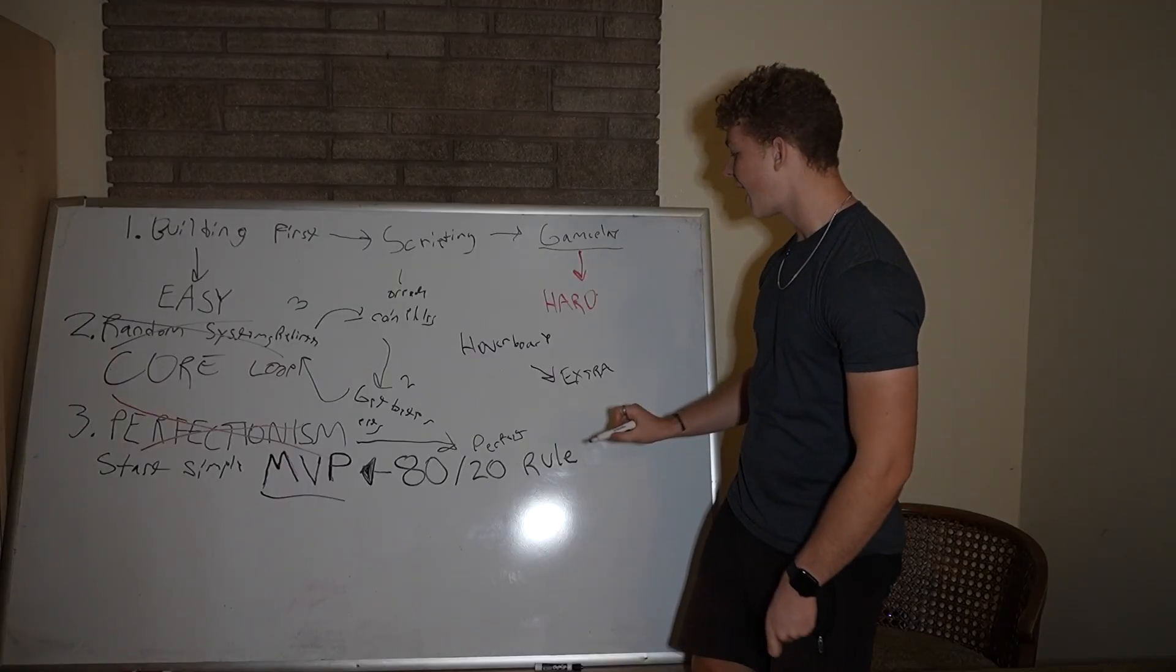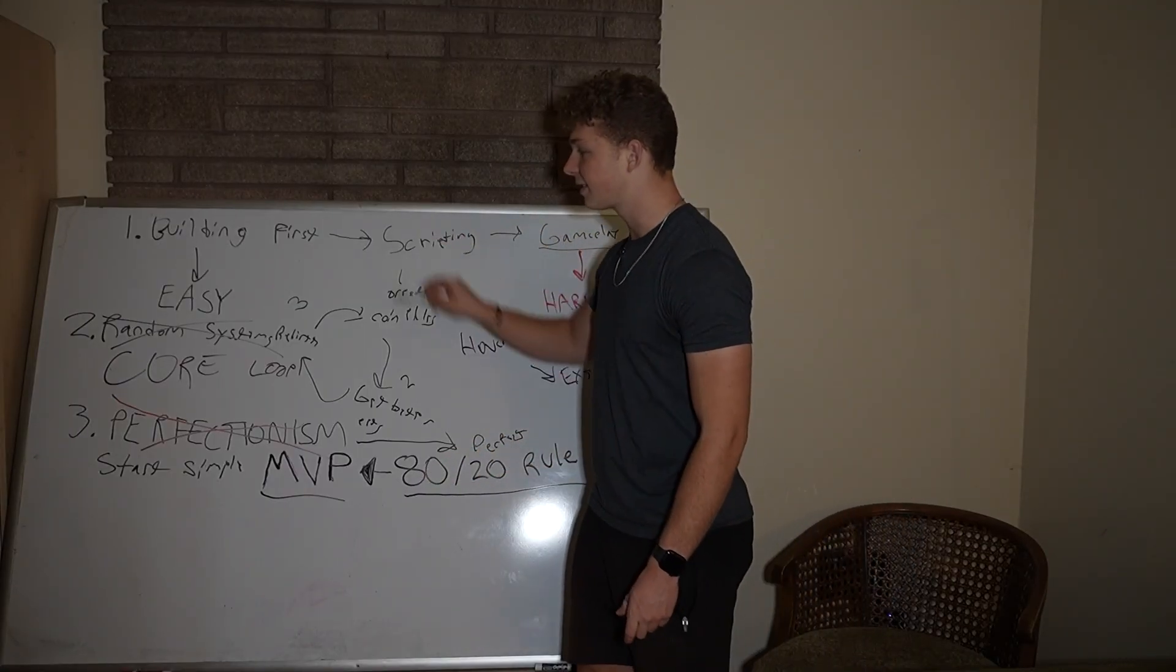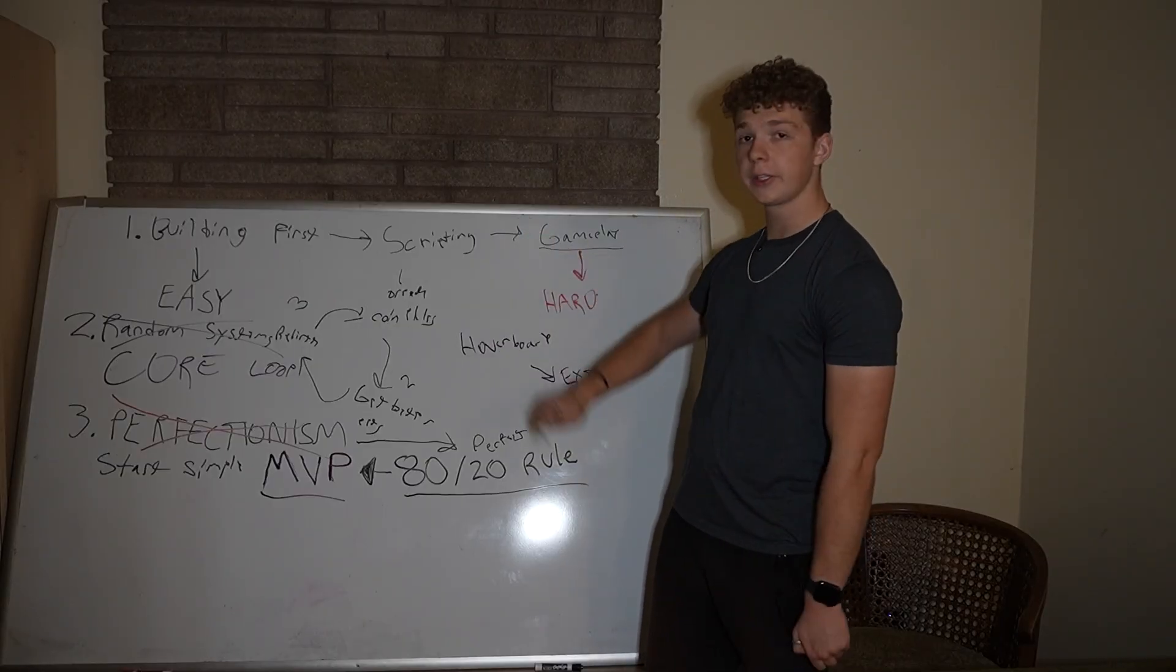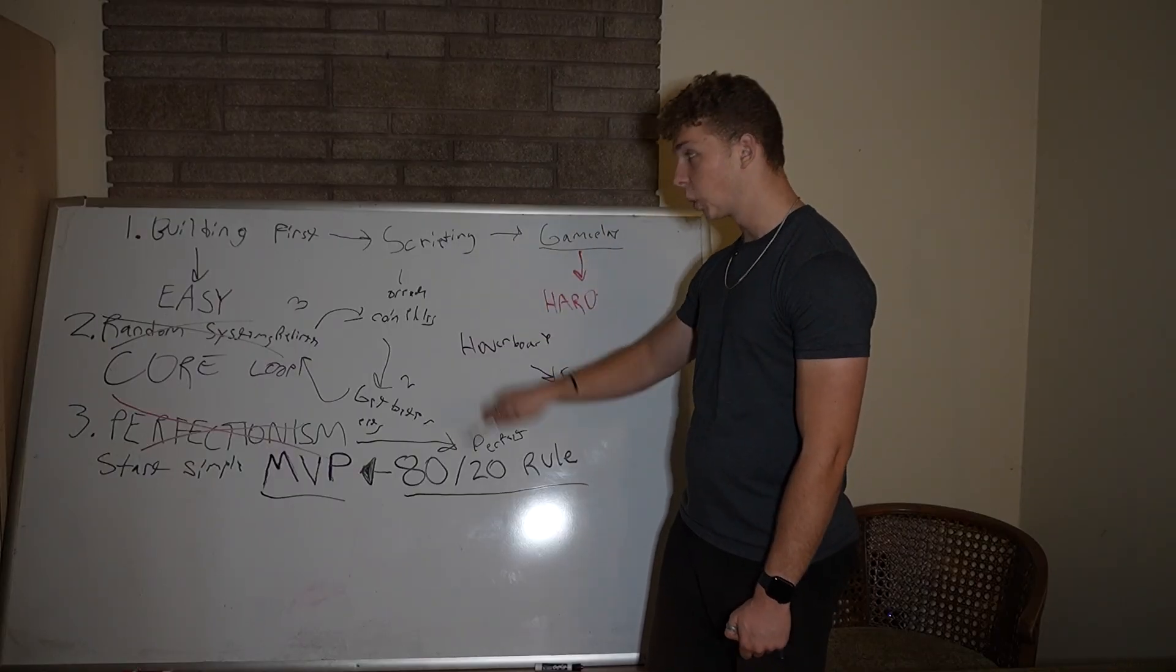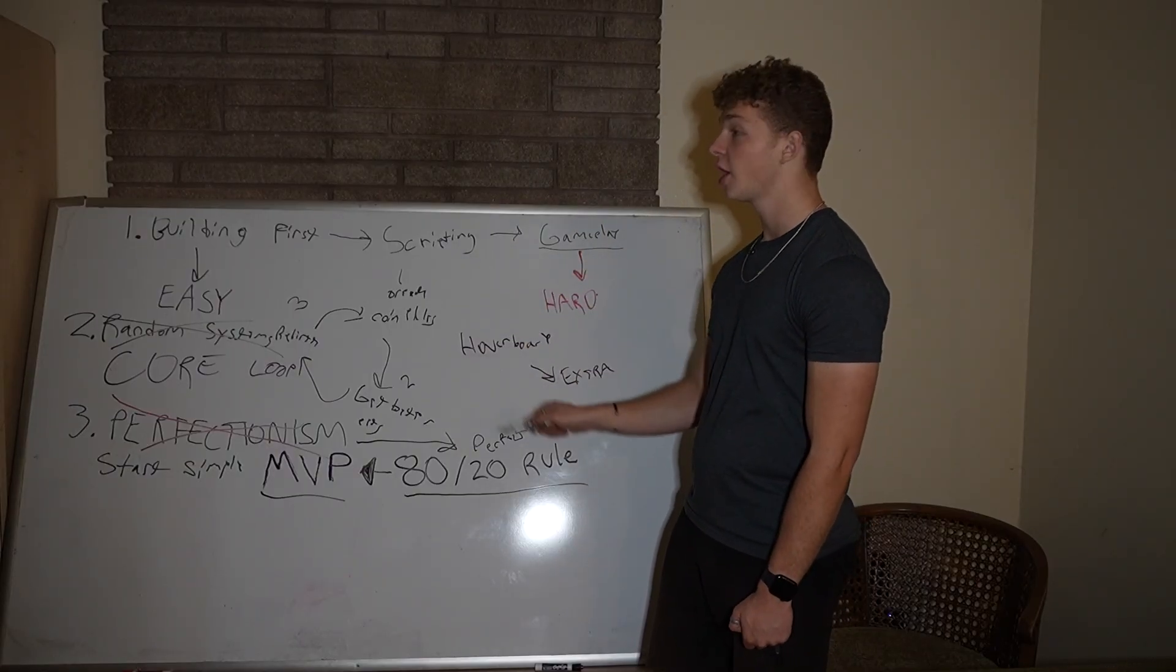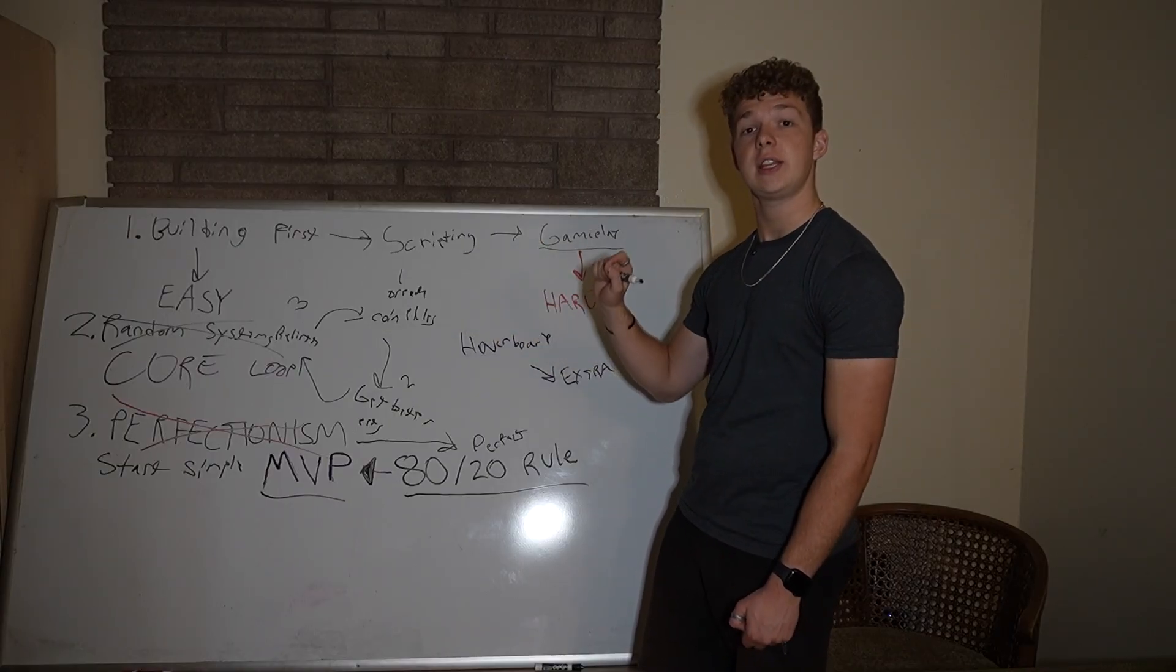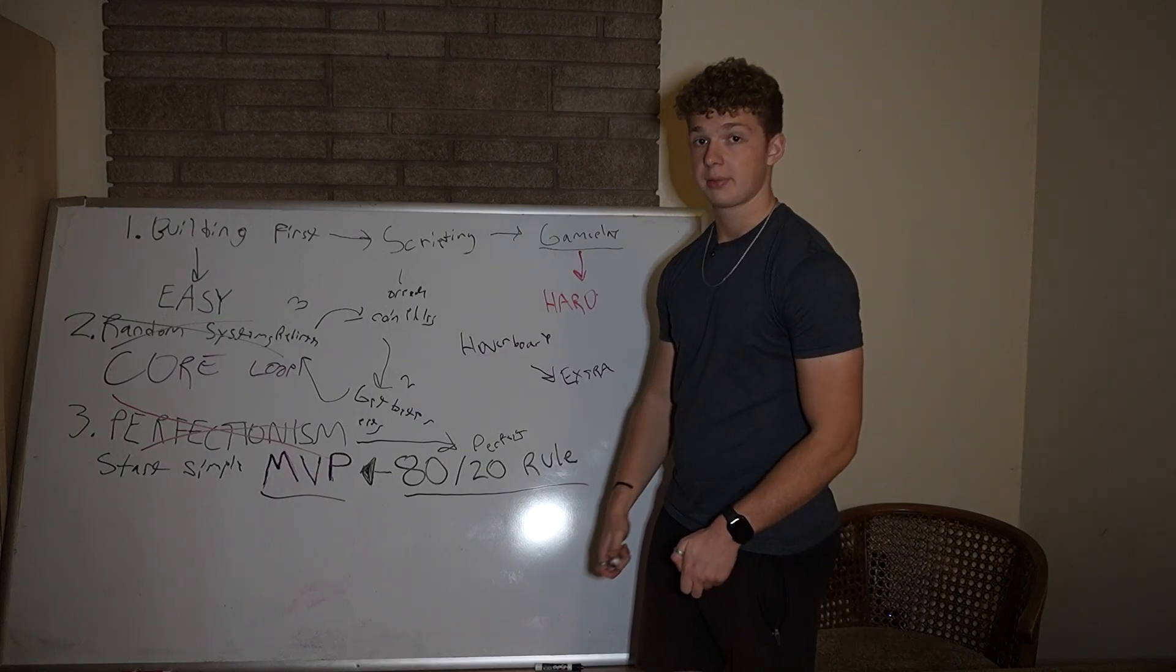The 80-20 rule is how we decide what goes into our MVP. We're looking for the highest leverage aspects of our game. The highest leverage skill to focus on is scripting. The highest leverage systems to script are the core loop systems. The highest leverage building and modeling work are the few maps and the few models you need to actually get to that functioning prototype.